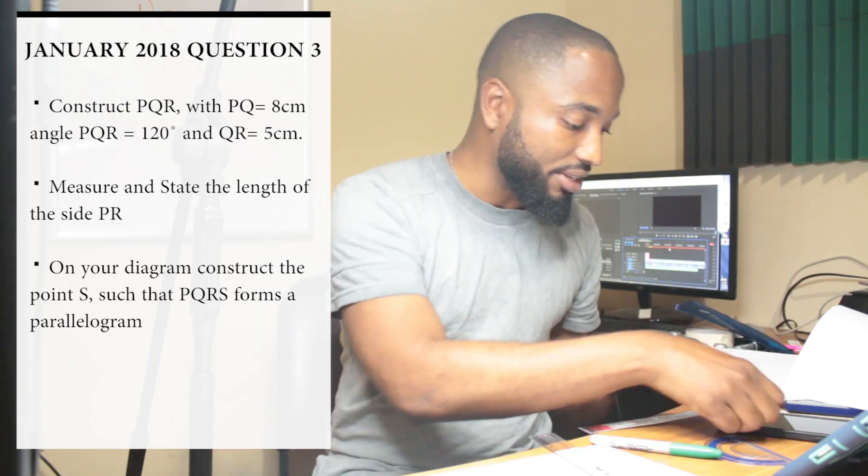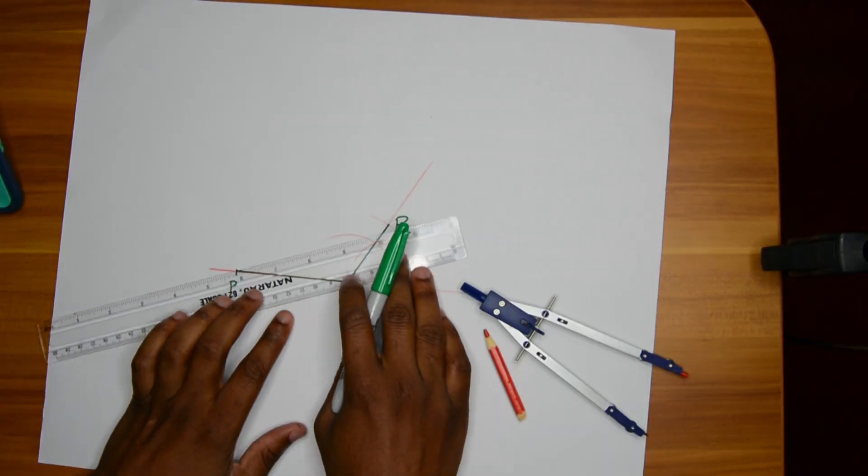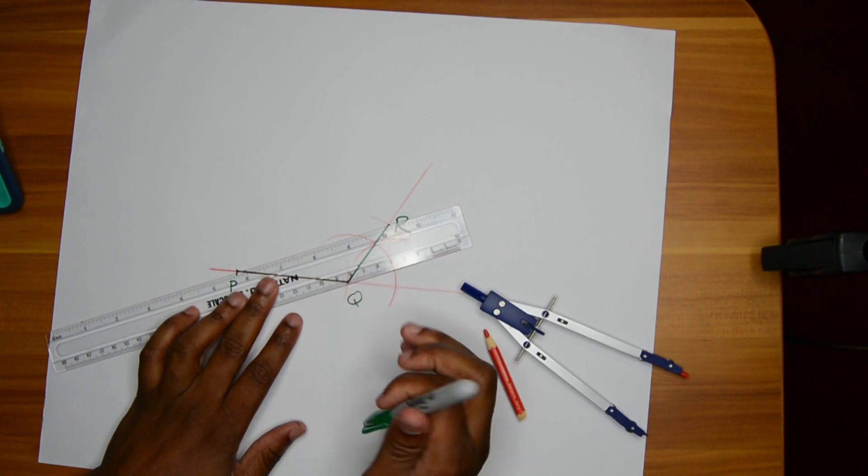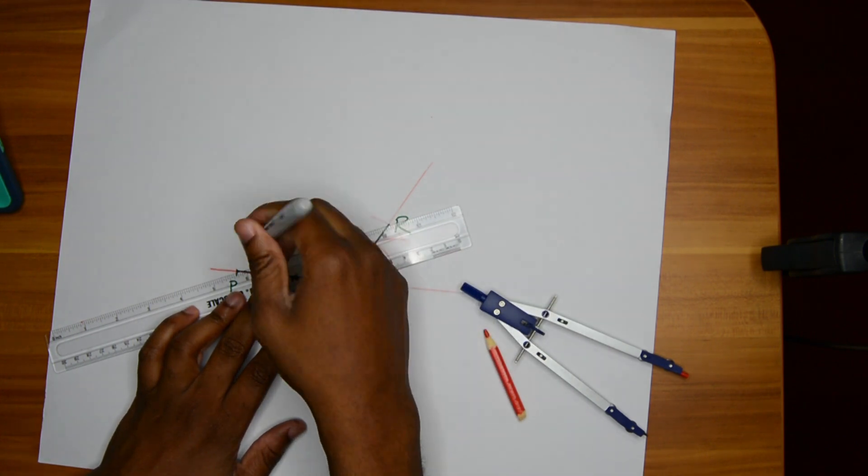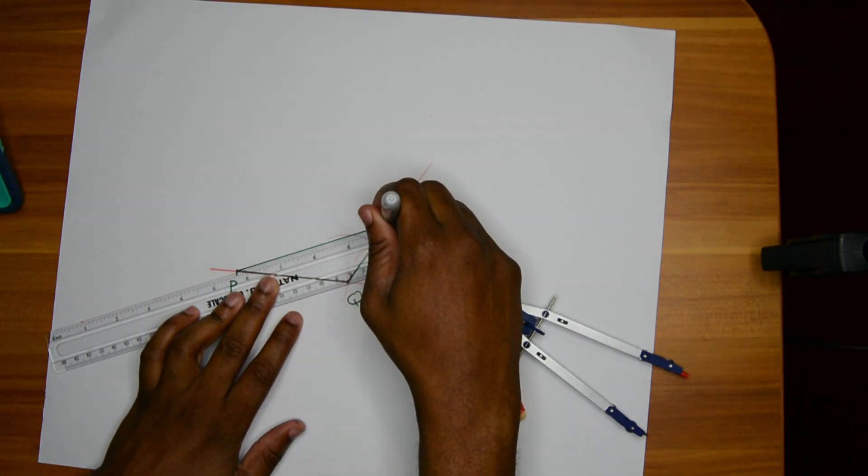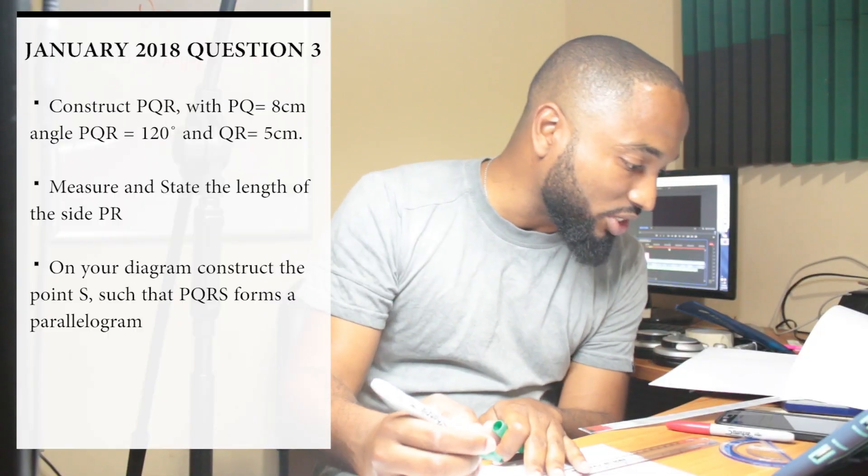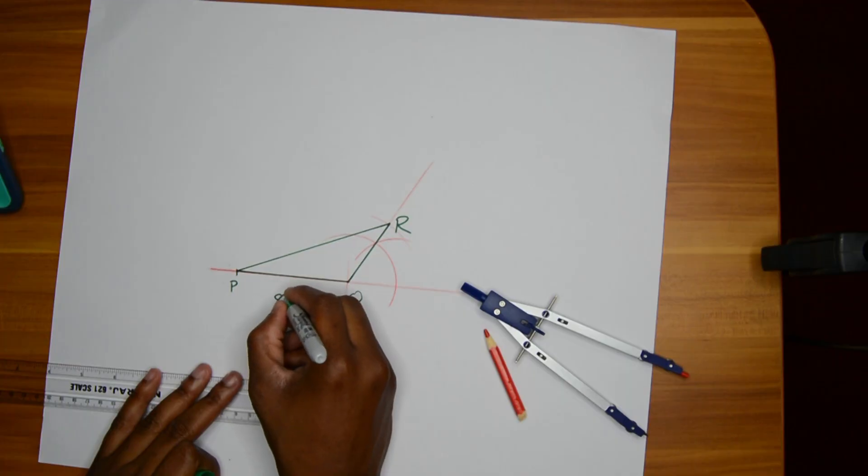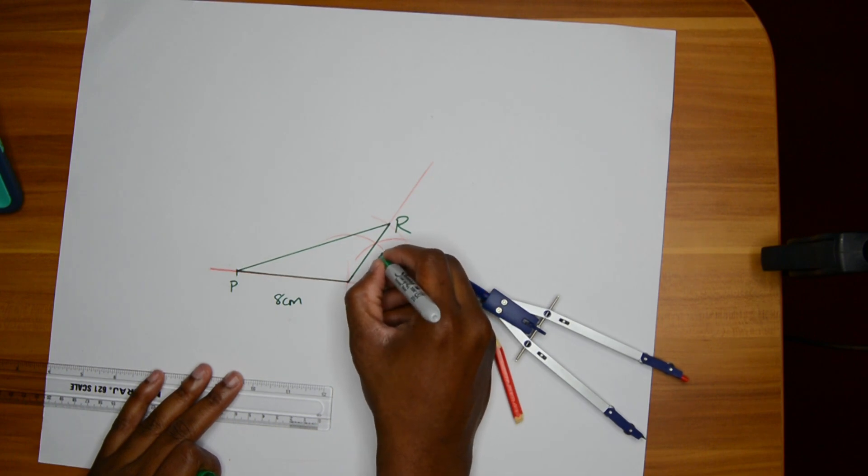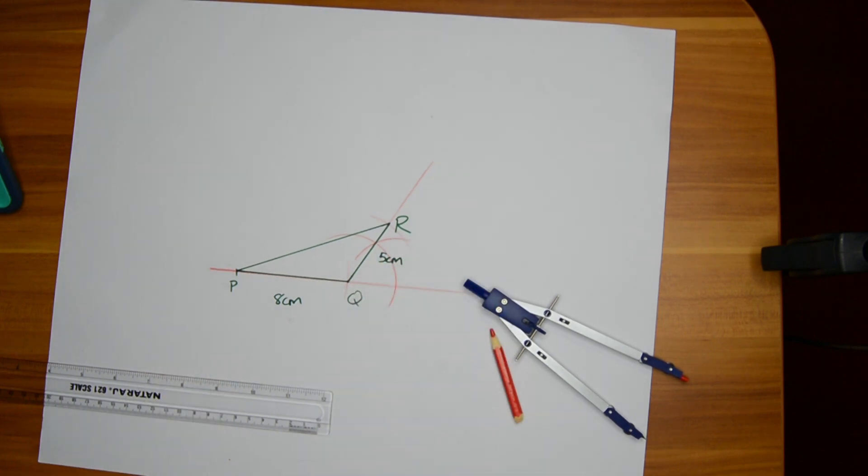It's a triangle so we need to connect P and R. No biggie, let me connect P and R. Now it's important that you put in your dimensions, so I might as well write 8 cm here, and 5 cm here. Beautiful.